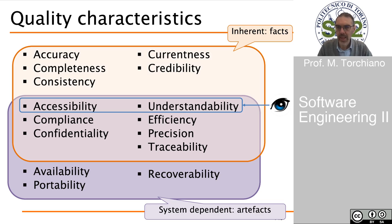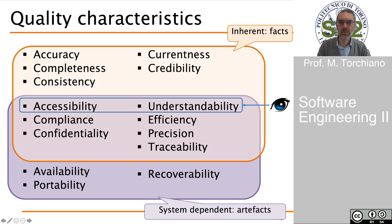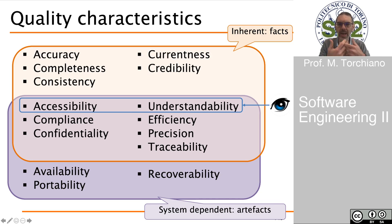In general, the characteristics that are clearly inherent — pertaining to the data itself — include accuracy, completeness, consistency, currentness, and credibility. The characteristics that are clearly system dependent include the availability of the data, portability, and recoverability. Then there is a set of characteristics that can be considered from both an inherent and system-dependent point of view: accessibility, compliance, confidentiality, understandability, efficiency, and precision. In particular, accessibility and understandability are related to the user interface — how data is presented by the system.